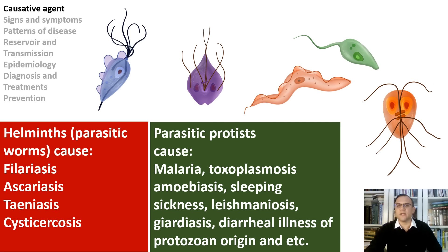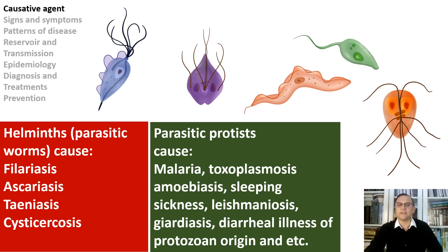Protists are eukaryotes that can cause diseases in humans and animals. Parasitic protists cause some of the most well-known human and animal diseases, such as malaria, toxoplasmosis, ameobiasis, African sleeping sickness, Chagas disease, leishmaniasis, and diarrheal illness of protozoan origin.